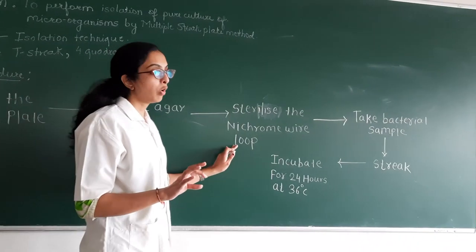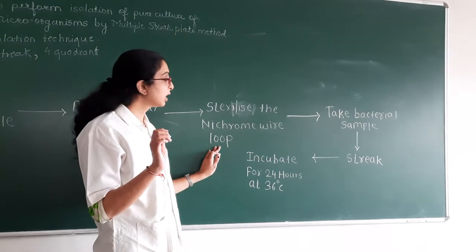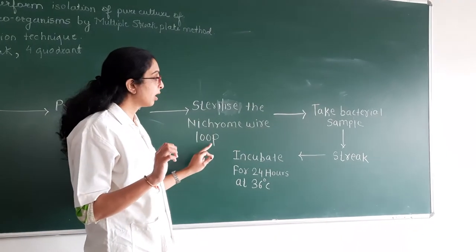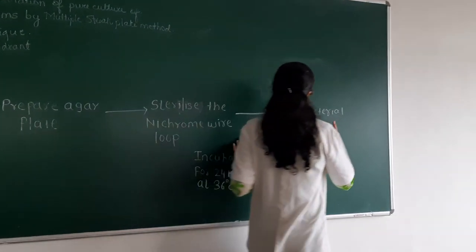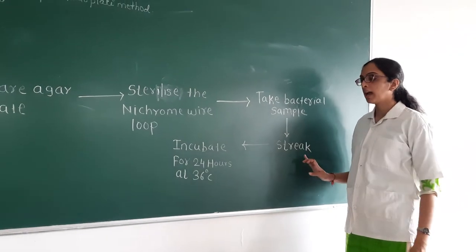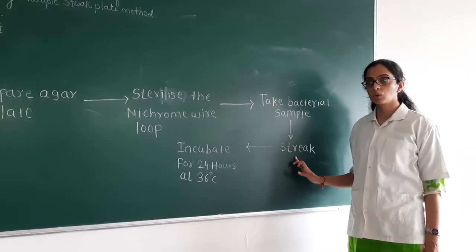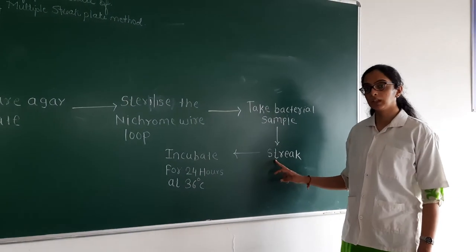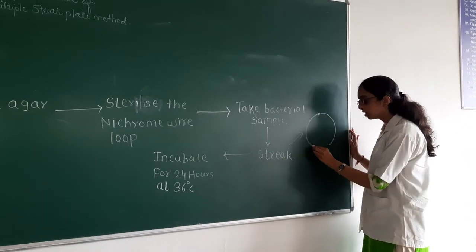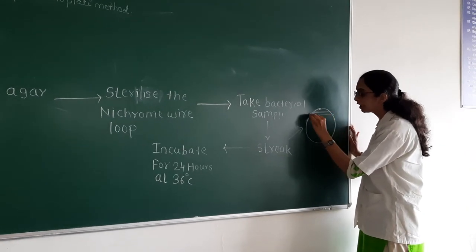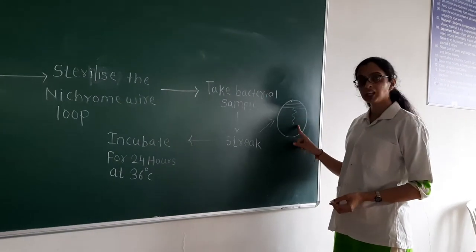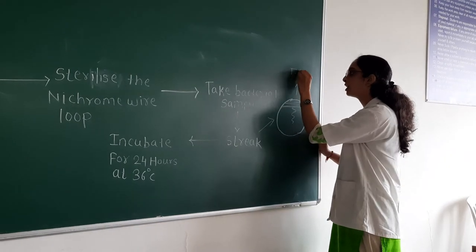Then you have to perform the inoculation procedure. First, sterilize the nichrome wire loop, then take the bacterial sample and streak it as per the marking on the plate. Two types of streaking are used: the T-streak, which is done in the form of a T shape, so you mark it likewise on the petri plate before adding the agar. This type of streaking is known as the T-streak technique.